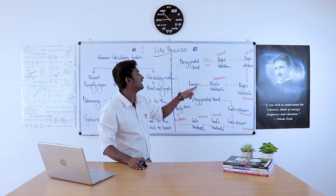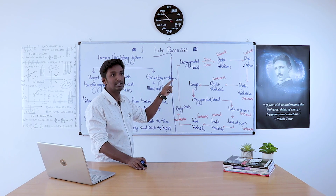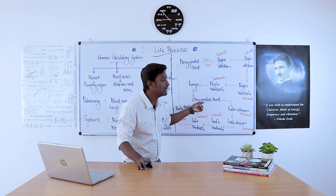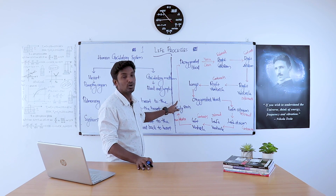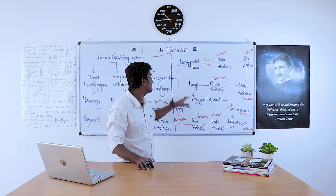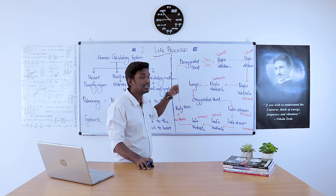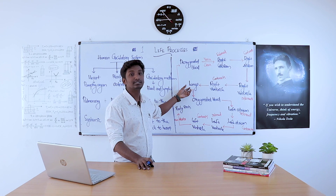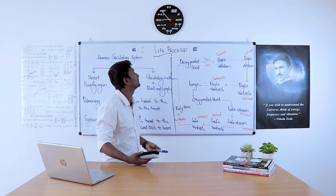Blood is pumped by the heart and deoxygenated blood through various paths reaches the lungs. From the lungs, oxygen is taken and the blood becomes oxygenated. Through the aorta, it reaches all body parts, gives oxygen to the body parts, and receives carbon dioxide. It then becomes deoxygenated again and continues to the lungs, which receive carbon dioxide. When we exhale, this carbon dioxide is expelled. This is the continuous process of circulation inside our body.